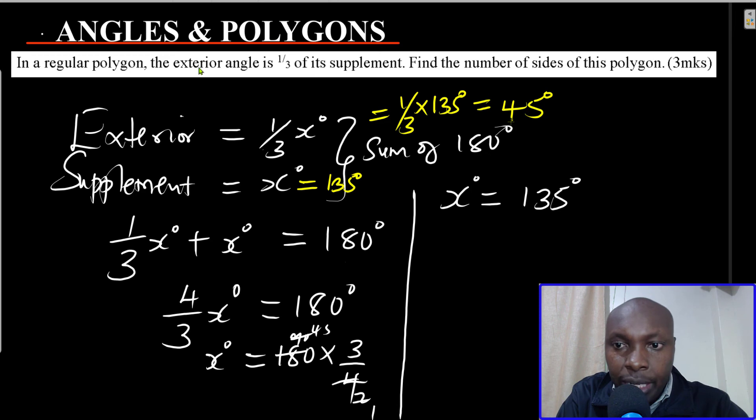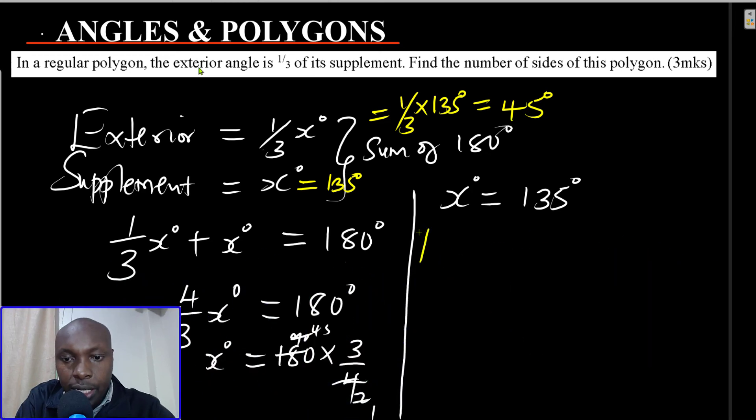Now the question is, find the number of sides of this polygon. So how do you get the number of sides? Number of sides of any regular polygon is given by 360 divided by the exterior angle.